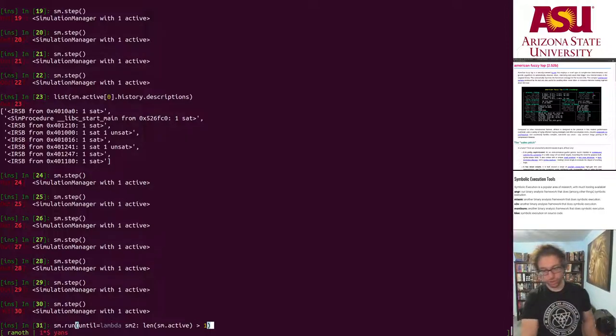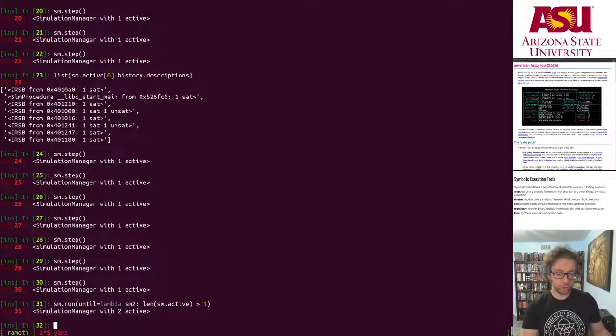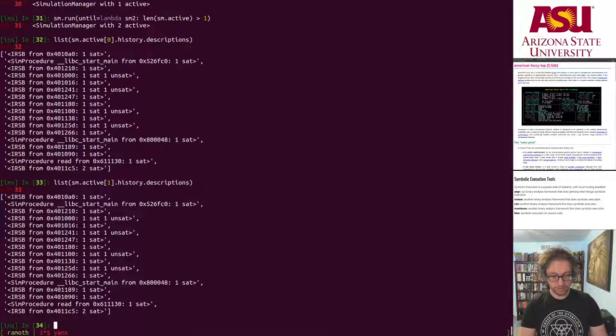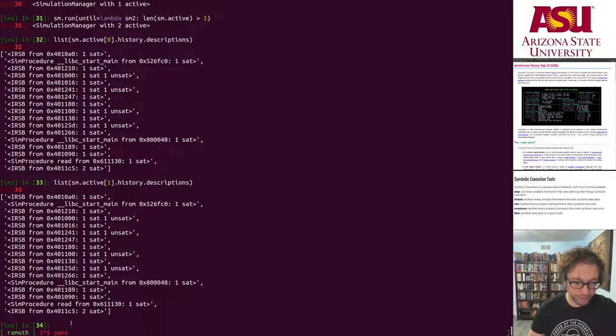So this will say execute until there is more than one active state. Boom, there's two active states now. So what happened? Let's take a look. Here is the history of both and the last thing they both executed, of course because they were the same path, the same state until very recently.